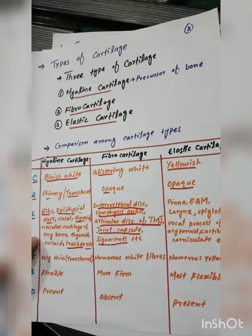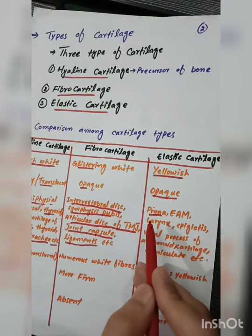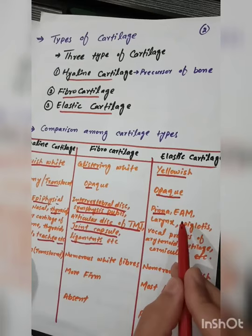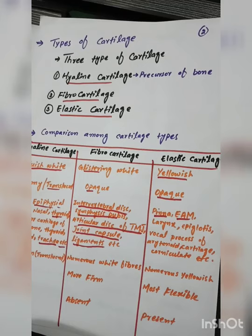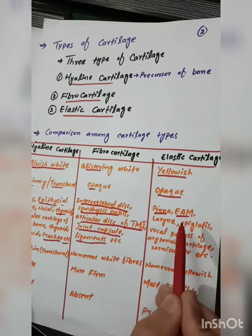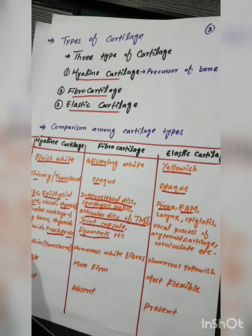The elastic cartilage is found in the external ear, which is the pinna. Next to the external auditory meatus, it is also elastic cartilage. The human ear has three main parts: the external ear, the middle ear, and the internal ear. The elastic part is called the external auditory meatus and the outer ear is the external ear.